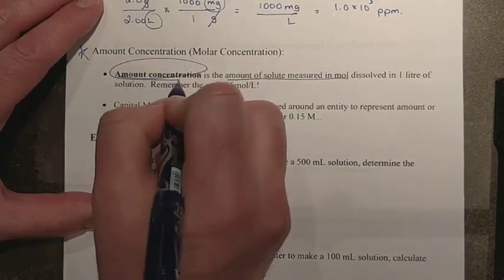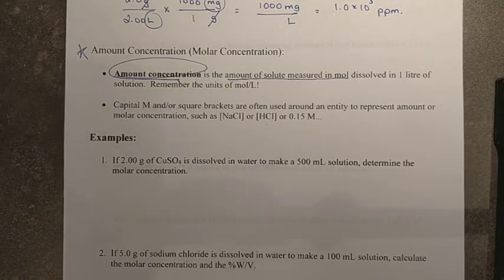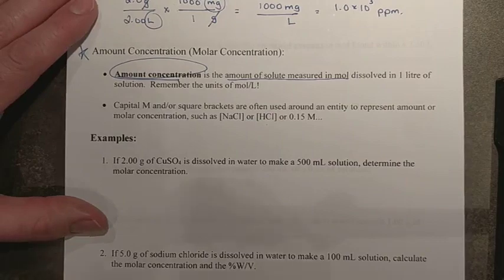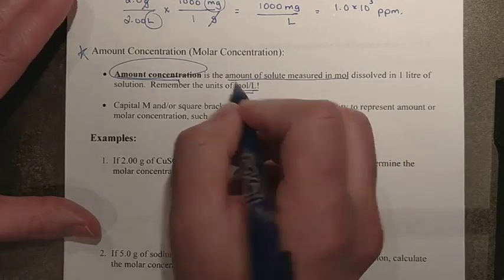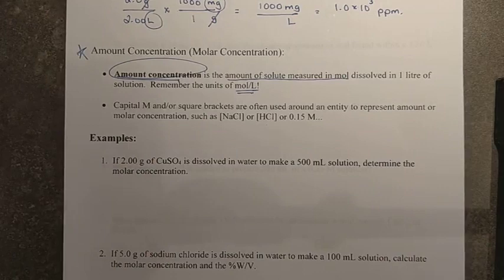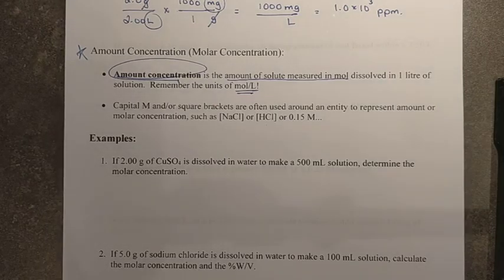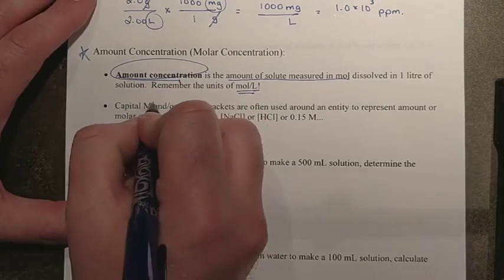Remember, when we use the term amount, we are talking about a mole quantity. So this is the amount of solute measured in moles. Now, we remember from Chem 10 that moles are not something we can get directly. We measure volumes, we measure gases, we measure masses, we do all sorts of different things, and we usually have to convert to moles.